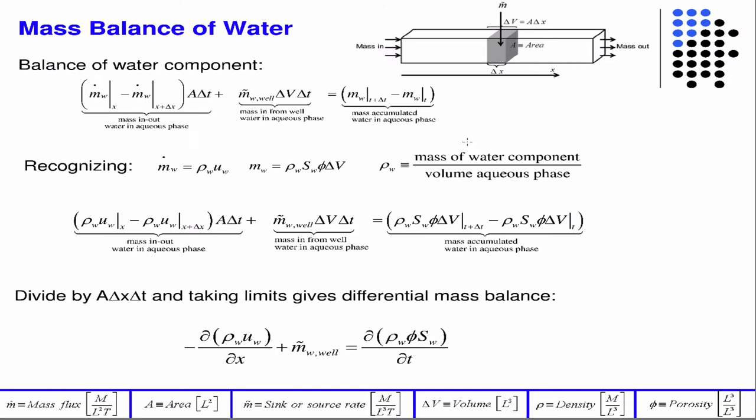We're going to balance on the component, and this is essentially exactly what we did in the single-phase case. We write the balance of mass — the mass in and out of the aqueous phase, mass in from a well, in or out depending on the sign, if it's an injector or producer, must equal the total mass accumulated in the aqueous phase.